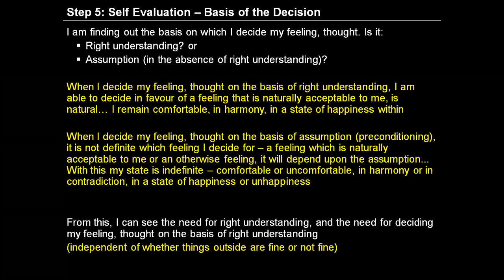If the assumption is wrong, then I am likely to decide for an unnatural feeling, which will lead to a state of unhappiness. So depending upon whether it is based on right understanding or not, I will be sure about my feeling or I will not be sure whether it will be natural or unnatural. Therefore, the way out ultimately is to have the right understanding, so that I can decide for a natural feeling and with that natural feeling be in a state of harmony and happiness.